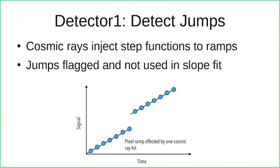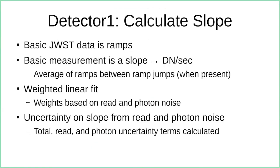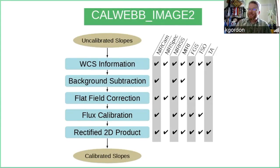We can detect that step function, flag it, and then fit before and after the cosmic ray step and average the results — so we can actually recover from a cosmic ray in that pixel. The final step in detector one is calculating the slope: a weighted linear fit to the linearized ramp after detecting and ignoring all the bad data. The weights are based on the read and photon noise model, which is well established for these detectors. We calculate an uncertainty from the fit — both the total uncertainty and the read and photon noise uncertainty terms separately — which we propagate through later pipeline stages.